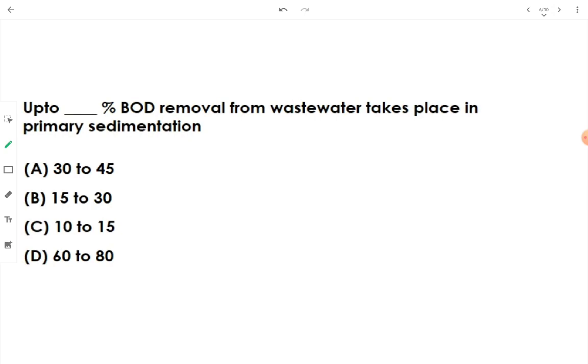Let's go to question number next, which asks us, up to fill in the blank percent BOD removed from wastewater expressed in primary sedimentation. Remember the answer, 30 to 45 percent. It is range. On an average, 35 percent gets removed, almost 40 percent gets removed.